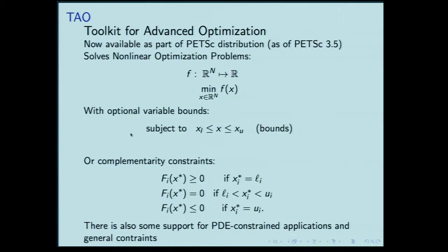For example, you want to minimize a function F of a large number of variables subject to bound constraints, or more general complementary constraints — where rather than just having constraints on the bounds, you have constraints on functions of the various variables. Included in that is support for PDE constraints and other types of constraints as well.